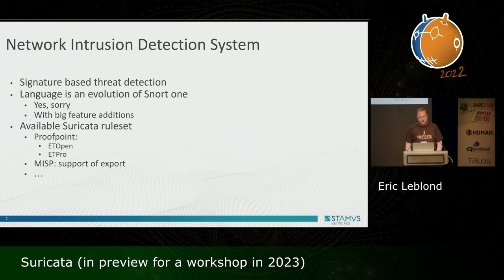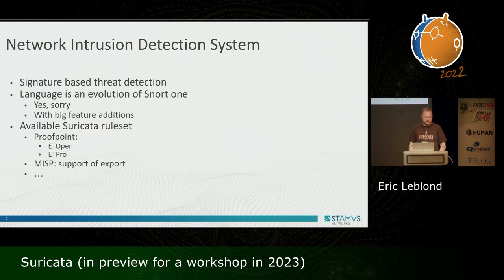A network intrusion detection system is nothing without good signatures. It's not because Proofpoint is one of the sponsors of this edition that I can say that we are providing two really good rule sets, which are ET Open and ET Pro. If you have a little bit of money, I really think you should spend it on ET Pro because the coverage is really better in terms of detection. Suricata is not bound to this — you have a lot of different public sources available, and you can also interact with tools like MISP, the Malware Information Sharing Platform, to import signatures published by partners.